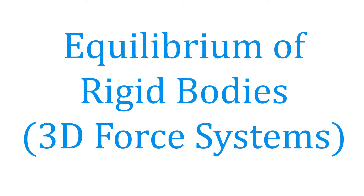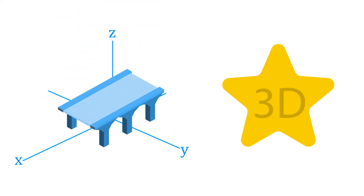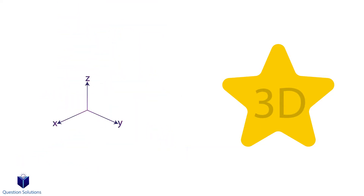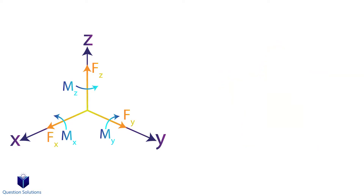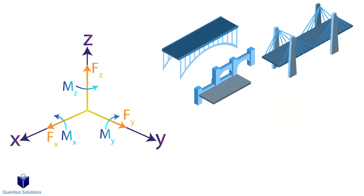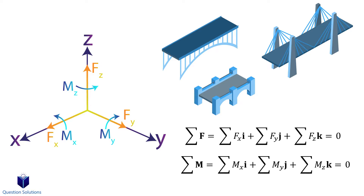In the previous video we talked about the equilibrium of rigid bodies with 2D or coplanar forces. Now we're upgrading to problems with rigid bodies that are subjected to three-dimensional force systems. With that comes x, y, and z axes, so that means we can have three support reactions along with three couple moments. The process to solve these problems is pretty similar to before, but now we're just working with everything expressed in Cartesian form.